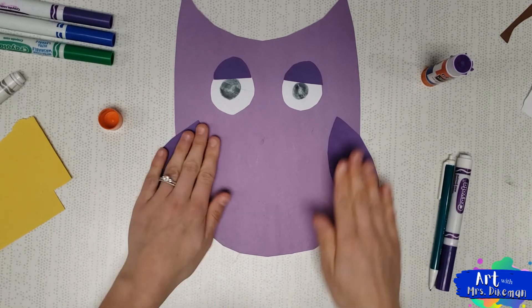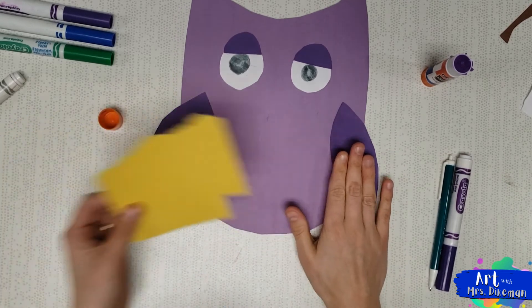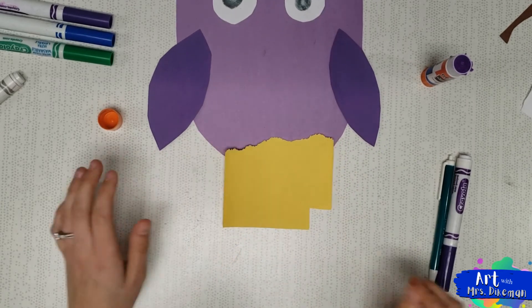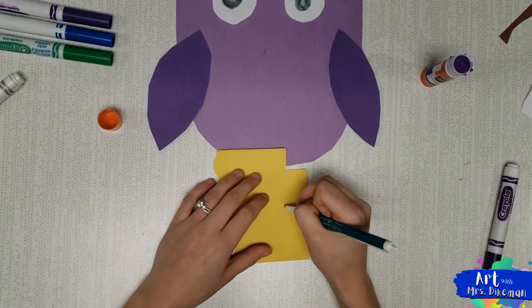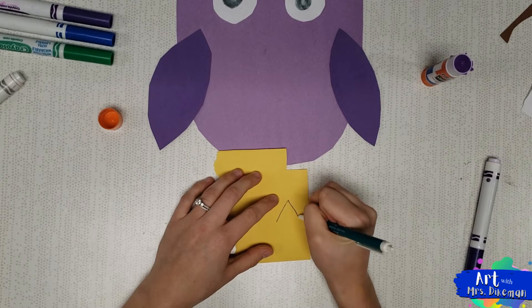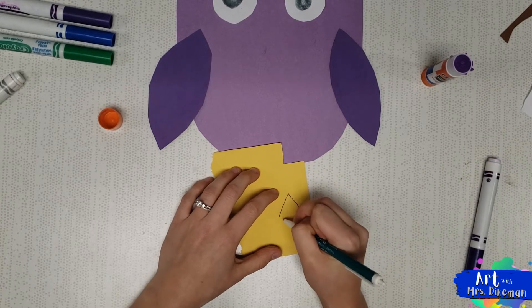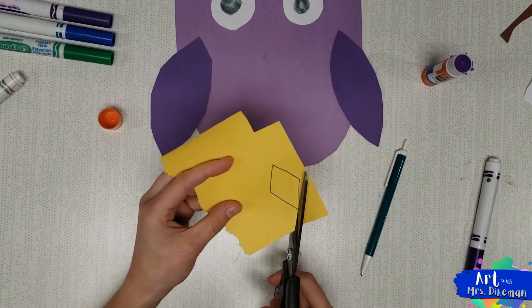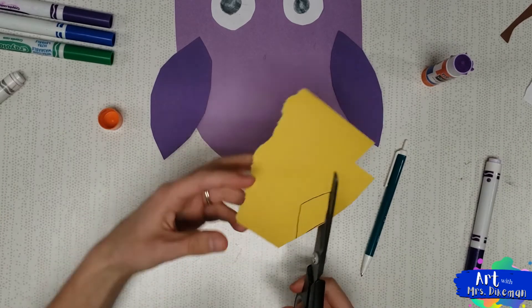The last couple steps we have is, I have a piece of just yellow scrap paper. With your scrap paper we are going to draw a diamond. This is going to be his dimensional beak. Dimensional means it's going to come actually off the paper towards you, and I'll show you this trick. We're going to cut out our diamond.